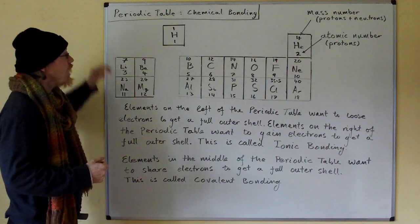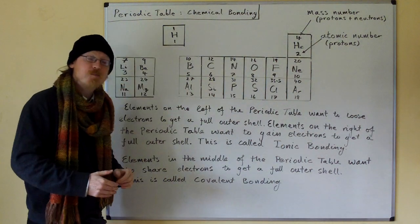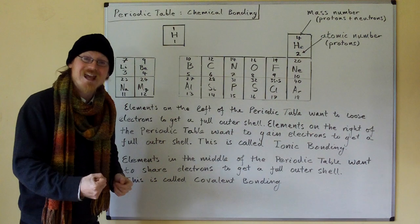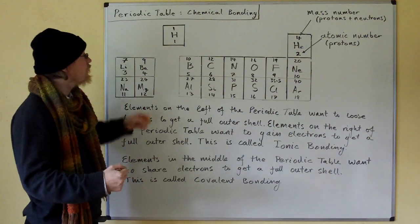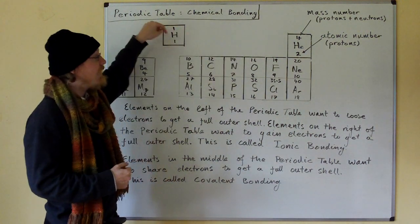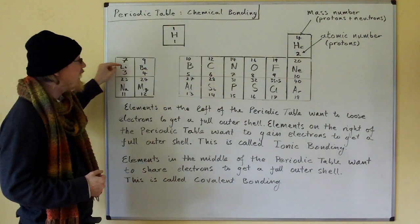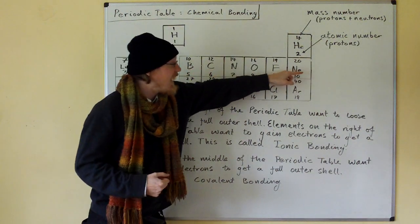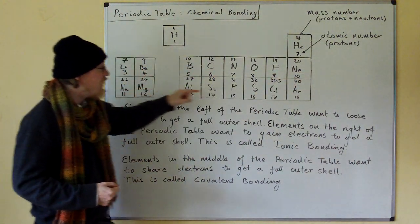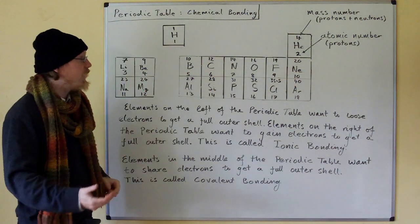The rows of the periodic table correspond to shells, or layers, of electrons. In the first layer we have two electrons. In the second layer we have eight electrons. In the third layer we have eight electrons as well.